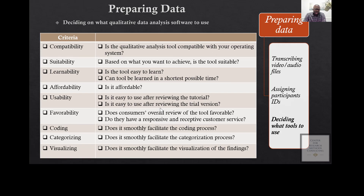Which one is good for you? It all depends. You have to think about eight or nine criteria to decide which one is best. The first one is compatibility. Some software may have a Mac version and also a Windows version, so if you have a Mac computer or laptop, you have to check whether that software has a Mac version available. If you have Windows, check whether they have a Windows version.